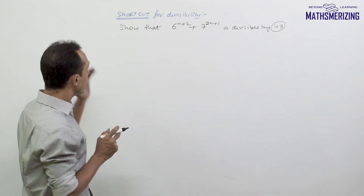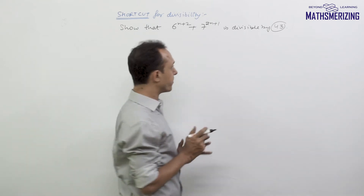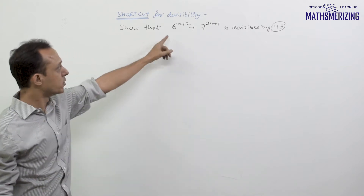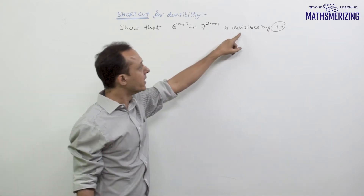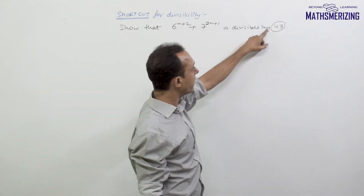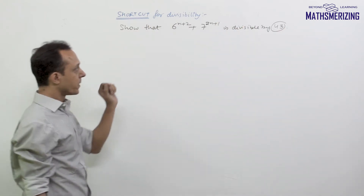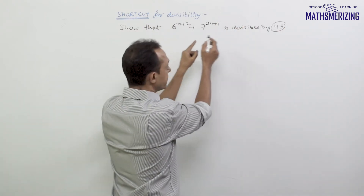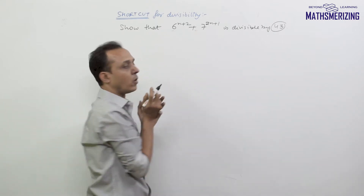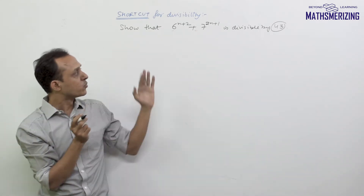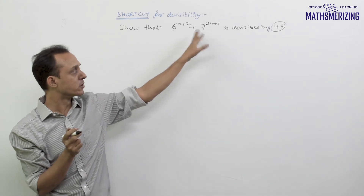Now we want to figure out if there's some sort of shortcut for divisibility problems. The question is: 6 to the power n plus 2, plus 7 to the power 2n plus 1, is divisible by 43, and we have to prove that. In order to show that this number is divisible by 43, I have to express either both or at least one of the numbers as some multiple of 43 or some number closer to 43.